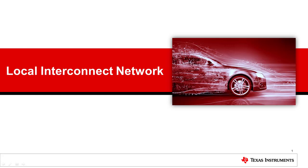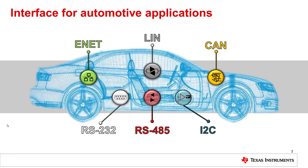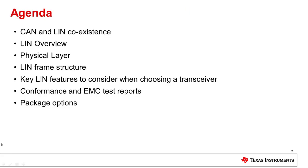Local Interconnect Network. Today we'll discuss the coexistence of CAN and LIN in automotive networks. We'll do a brief LIN overview, discuss the physical layer, and then follow on with the LIN frame structure, and discuss the key LIN features to consider when choosing a transceiver. We'll also discuss the conformance and EMC test reports available for Texas Instruments LIN transceivers, and discuss the different package options available.